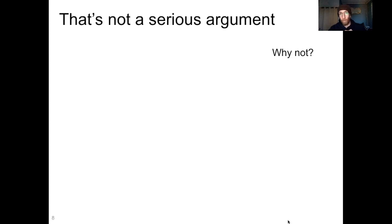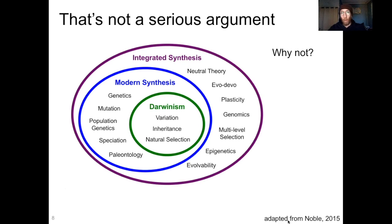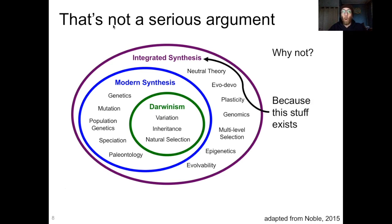This is not a serious argument. Here's a figure I use when I teach intro-level evolutionary biology. It shows the breakdown of evolutionary theory into three main eras: Darwinism, the modern synthesis — which is not modern anymore, that's from the 1940s — and then the modern version of evolutionary theory, which I and other people call the integrated synthesis. Well, Michael Behe spends a great deal of time arguing against the modern synthesis. But all of this other stuff exists: neutral theory, evo-devo, genomics, deep homology, epigenetics — all of that stuff exists.